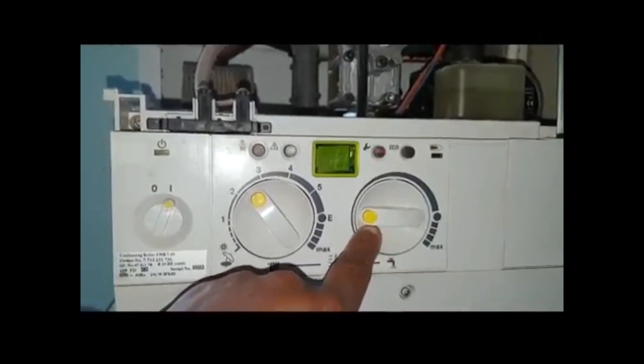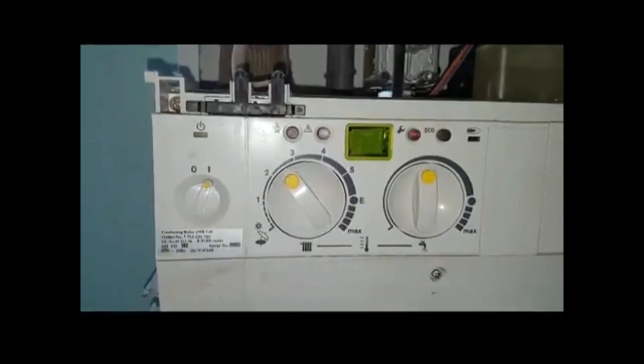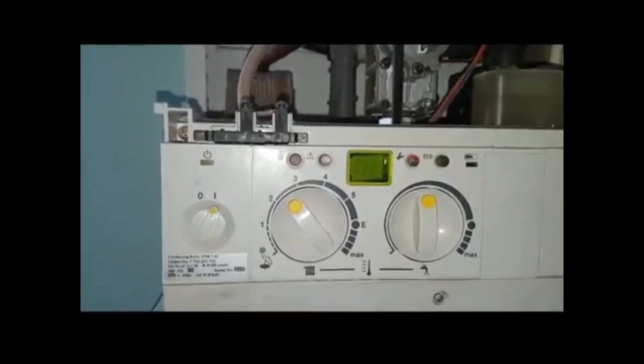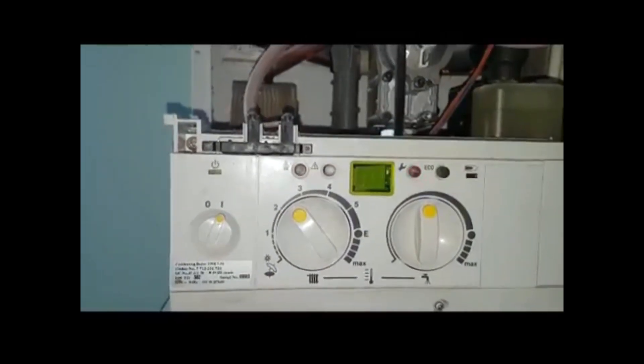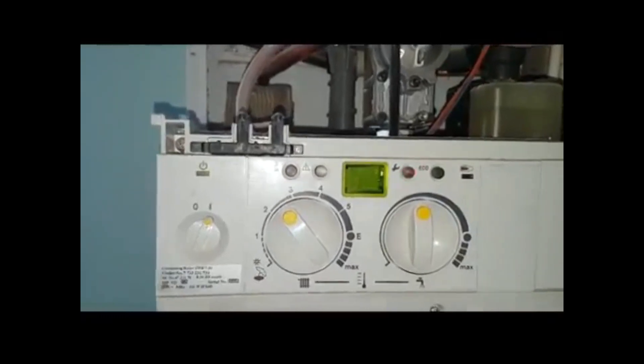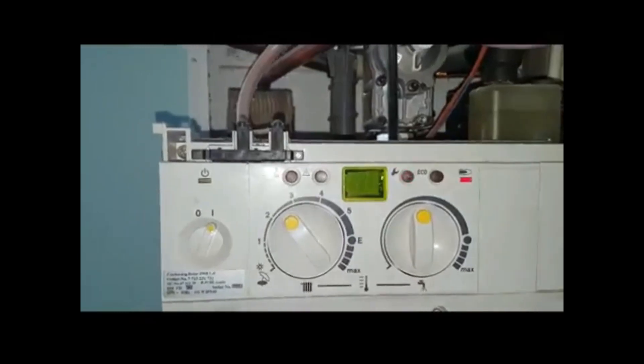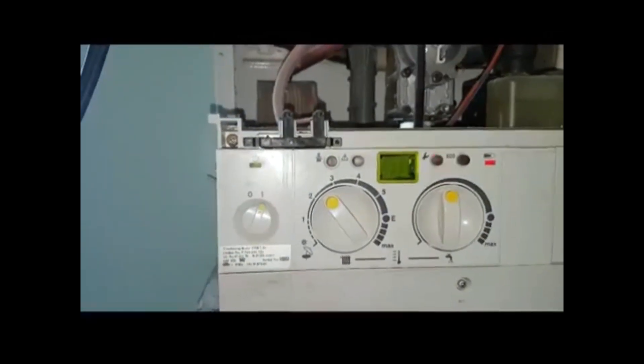Now on position 1, that means it's at the minimum fan speed. So the boiler is now lit up, you can see the burn light come on and the flame. So you now can analyze the gas with the low fan speed.